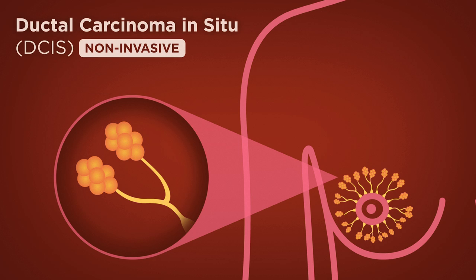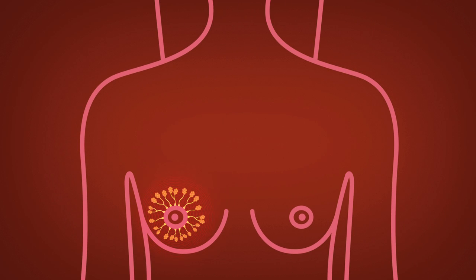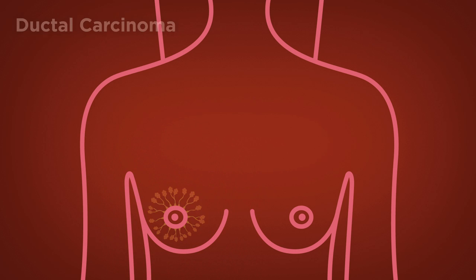Ductal carcinoma in situ, DCIS, is a type of cancer that forms in the milk ducts and is considered noninvasive because it has not spread to any surrounding tissue. If the cancer has spread beyond the milk ducts, it is known as ductal carcinoma.